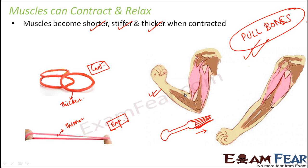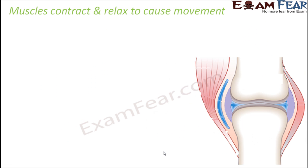But you also want your hand to go back to the original position. For the bone to return, something needs to pull it in the opposite direction. So if there is a muscle on the other side, when that muscle contracts it pulls the bone back. That is why muscles always work in pairs — one pulls the bone in one direction, the other pulls it in the opposite direction.